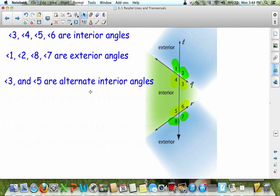Next, 3 and 5, we're going to call them the alternate interior angles. If you notice, they're on alternate sides of the transversal. So those are alternate interior angles. And if you want to do them in a different color, that would be great to show that. And feel free to pause at any time.